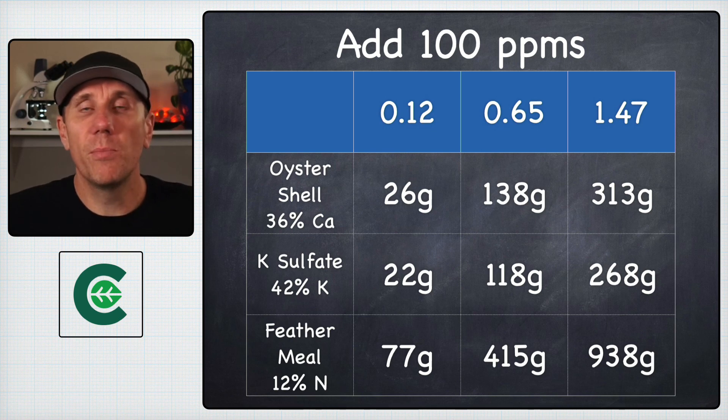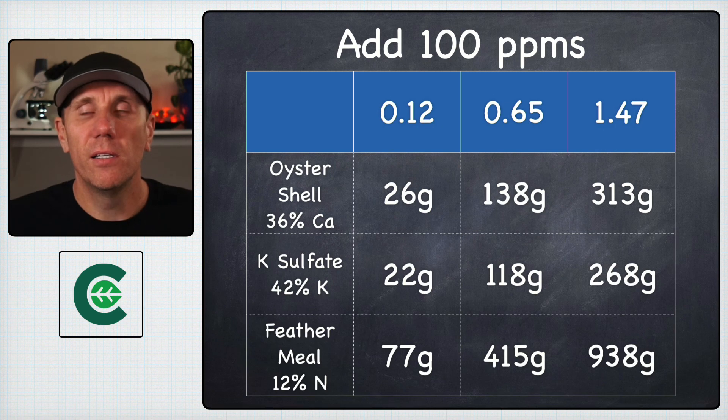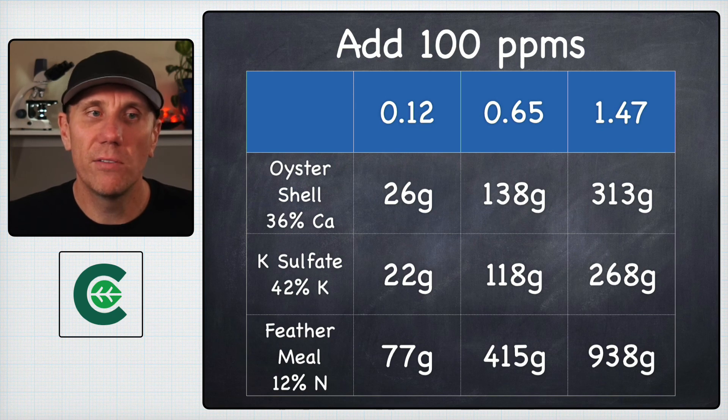Same with potassium sulfate that's 42% potassium - it's only going to take 22 grams to increase 100 parts per million in that lightest soil and it's going to take all the way up to 268 grams on that heaviest native soil.